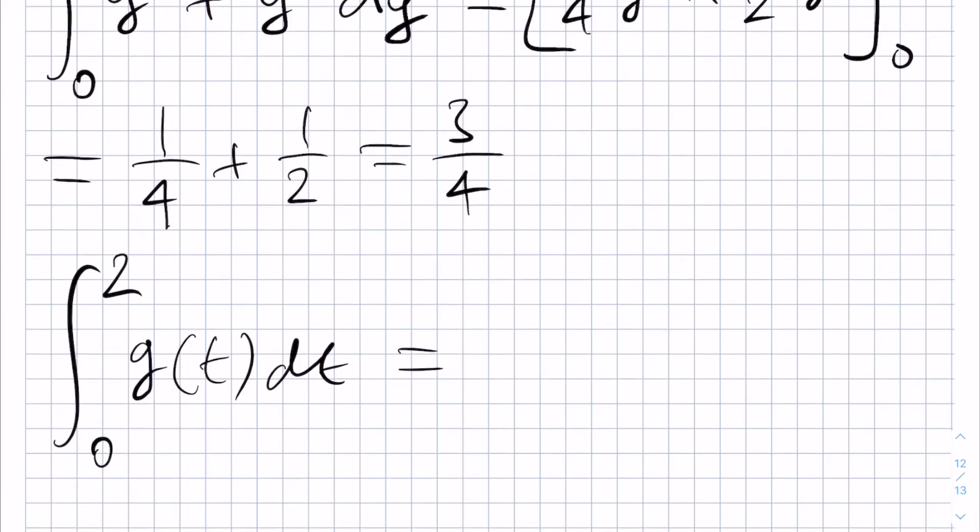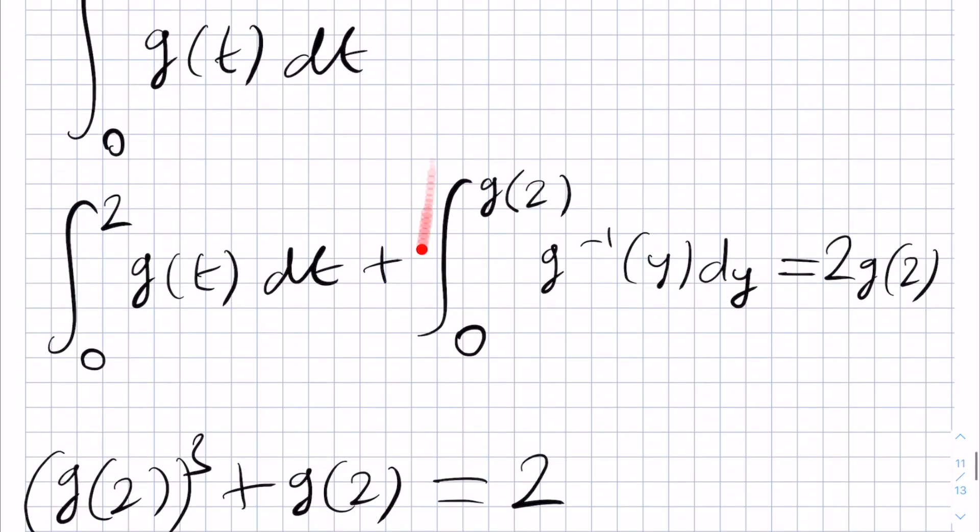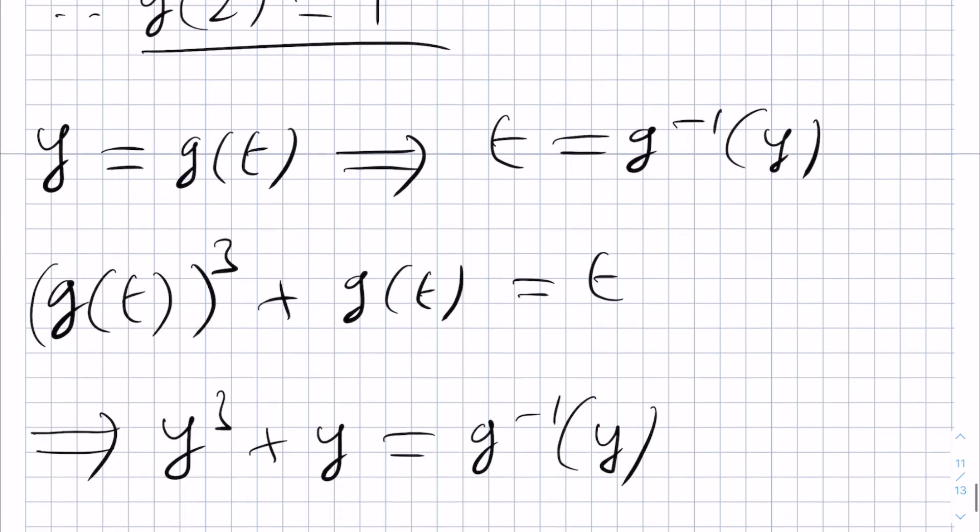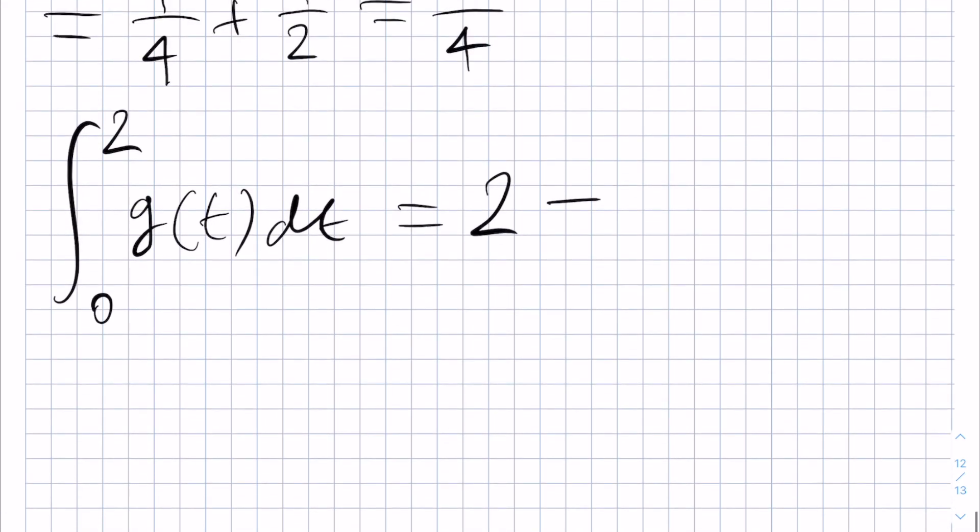2g(2) over here is 2 times 1. So that's 2. And then we subtract the integral that is here, which we found a moment ago is 3 quarters. As a result, we get the final answer as 5 over 4 for this part of the question.